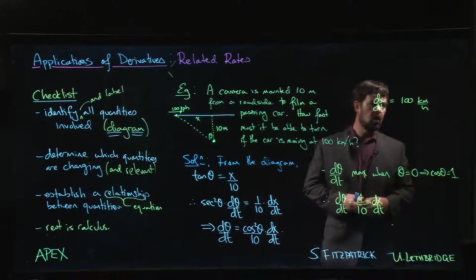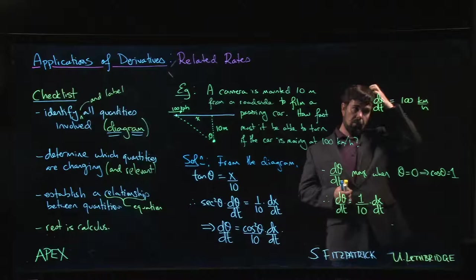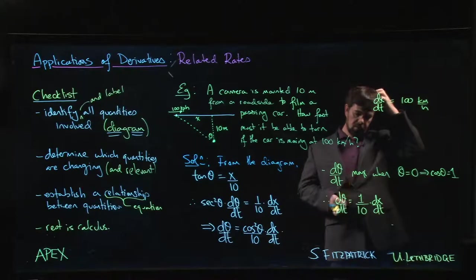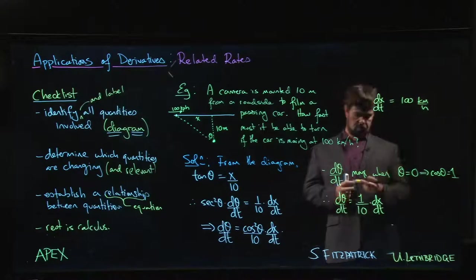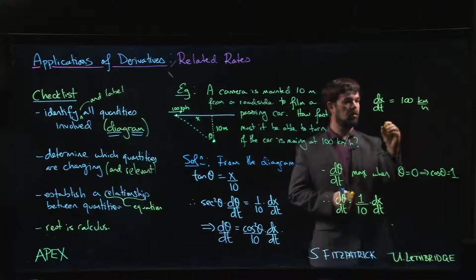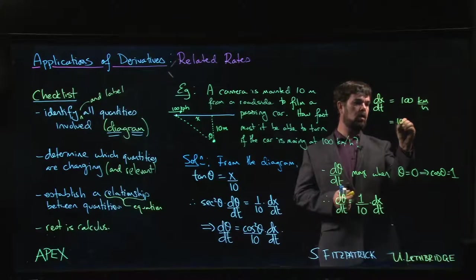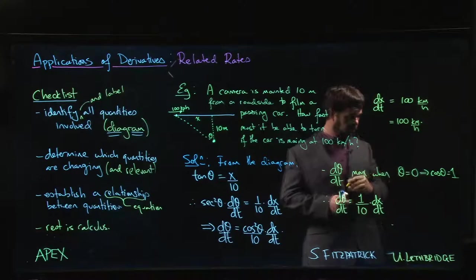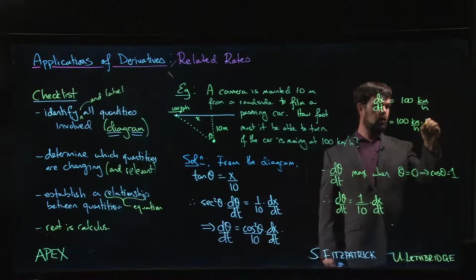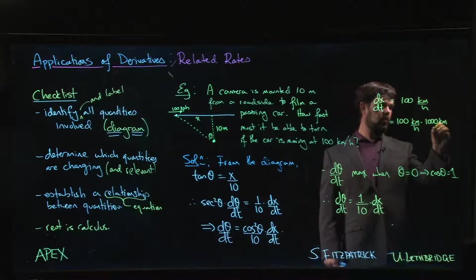100 kilometers per hour, but we're dealing with meters and seconds. So this is 100 kilometers per hour times one thousand meters in a kilometer.